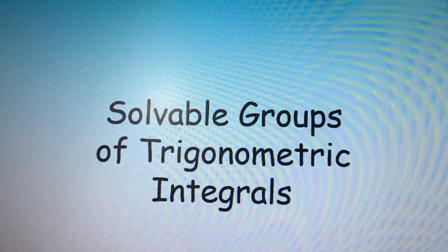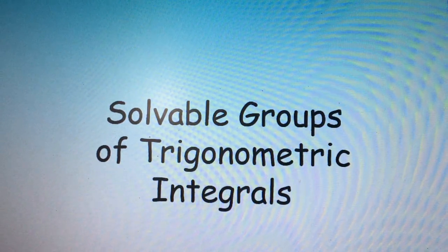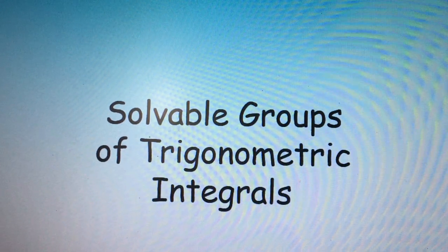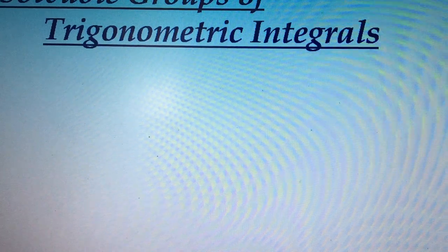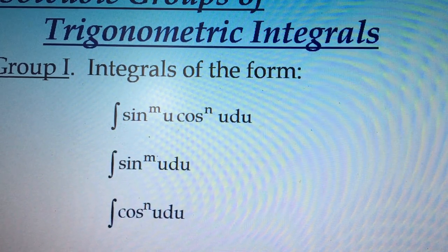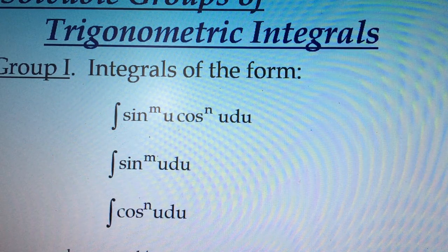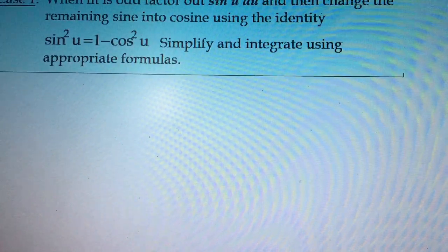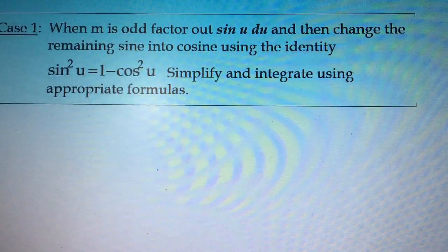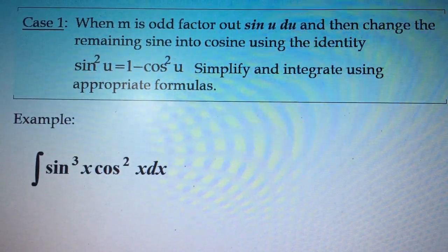Good day everyone, welcome to our session today. We are going to wrap up everything about solvable groups of trigonometric integrals. As we discussed last time, we have Group 1 integrals of the form where M and/or n are positive integers, and we had solved three cases in our previous discussions. Then we solved this example.